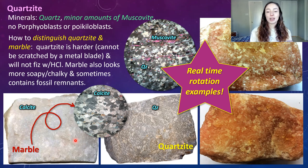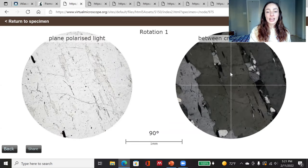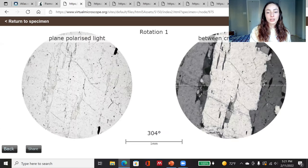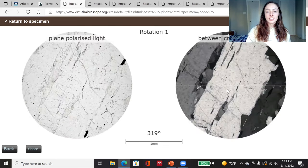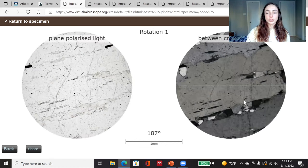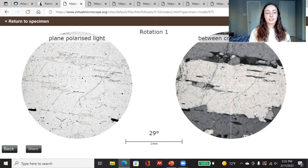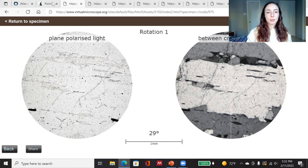Now for some real-time examples where I'll rotate the thin section under the microscope. Here we have an example of quartzite where you can see the black and white flashing of the quartz under cross-polarized light. These grains of quartz are much larger than the previous sample, so they're taking up most of the frame. As we rotate it, you can see them speckle and flash. This sample also has a little bit more of a preferred crystal orientation, meaning it probably underwent higher pressures when it was being metamorphosed.